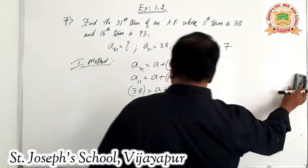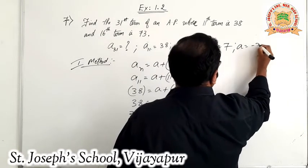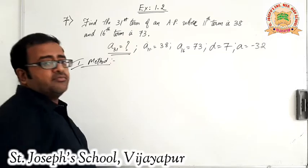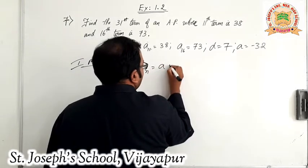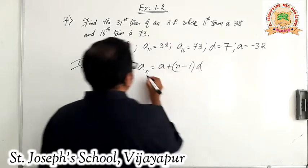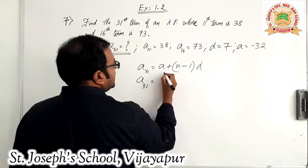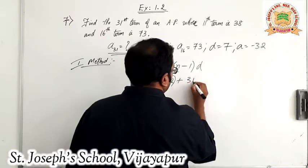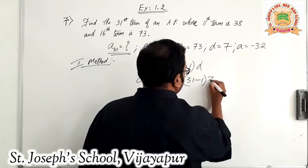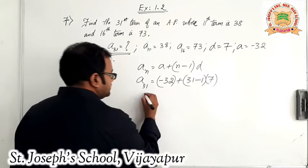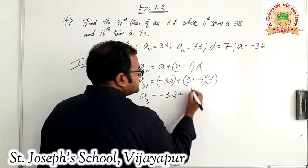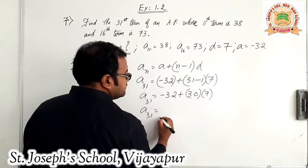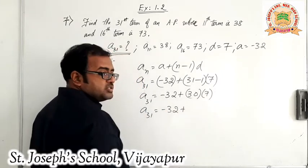So we got A equal to minus 32 and D equal to 7. Using these two, we will find A31. AN equals A plus (N minus 1) into D, with N equal to 31. So A31 equals minus 32 plus (31 minus 1) into 7, which is minus 32 plus 30 into 7, giving minus 32 plus 210.